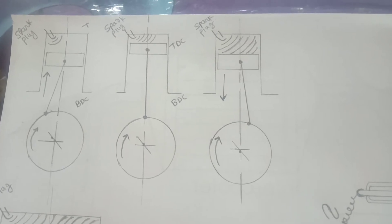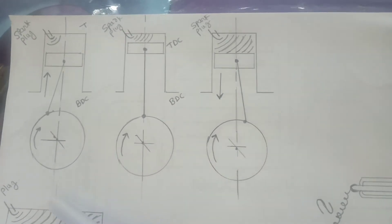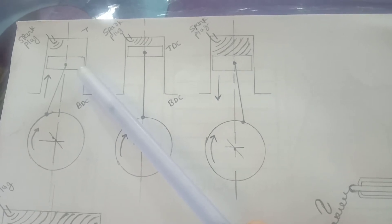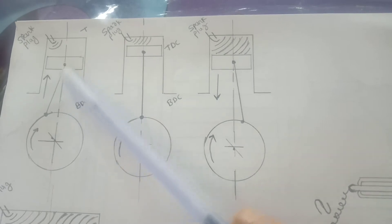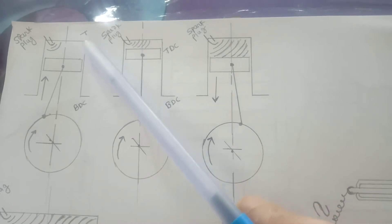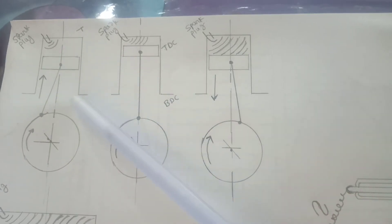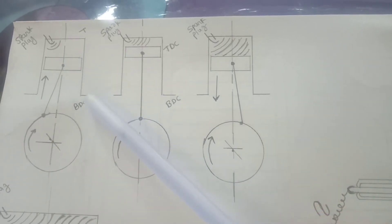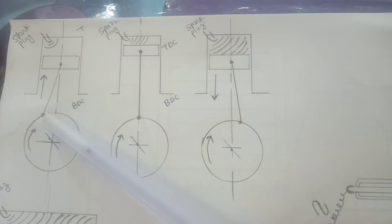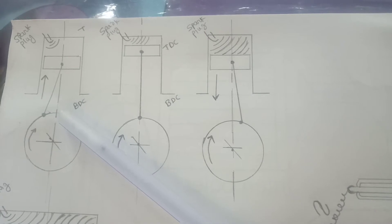The piston is moving from BDC to TDC in the power stroke. This diagram shows the crank, piston, cylinder, spark plug, bottom dead center, and top dead center. When the piston moves from BDC to TDC — bottom dead center to top dead center — a few degrees before TDC, this is the point where the piston reaches the top dead center.